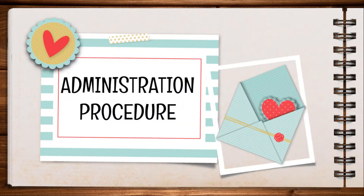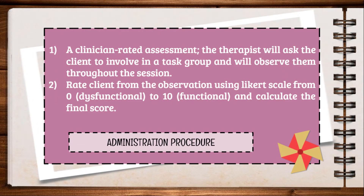Next is the administration procedure to use OTOS. Firstly, this assessment is a clinician-rated assessment. The therapist will ask the clients to involve in a task group that they will assign to the patients, and the therapist will observe the client through the session. Next, the therapist will rate the client using a scale from 0, which indicates dysfunctional, to 10, which indicates functional. And lastly, the therapist will calculate the score from the observation toward the client.